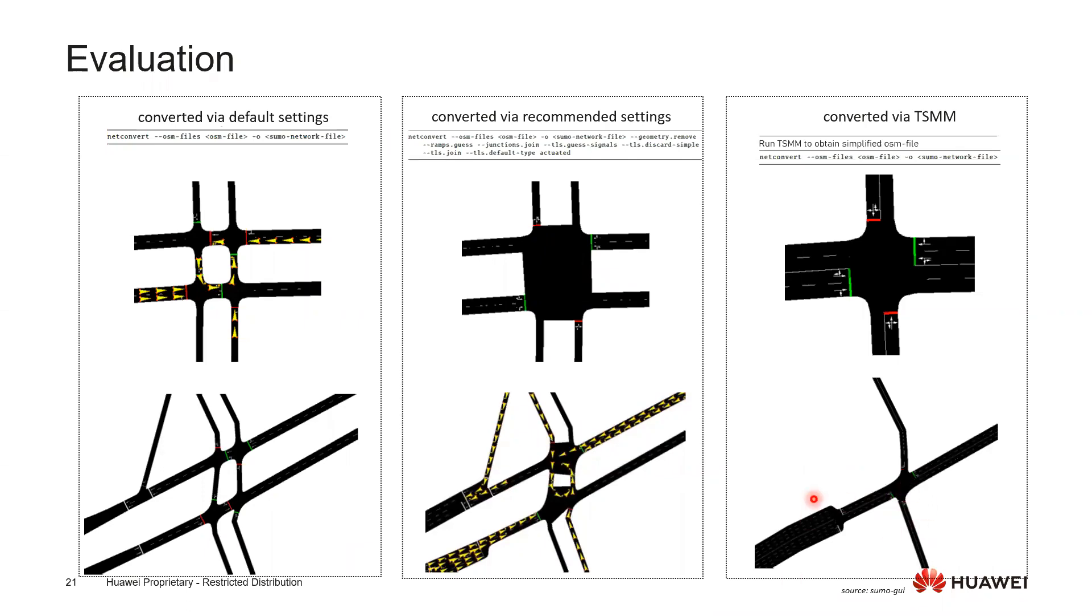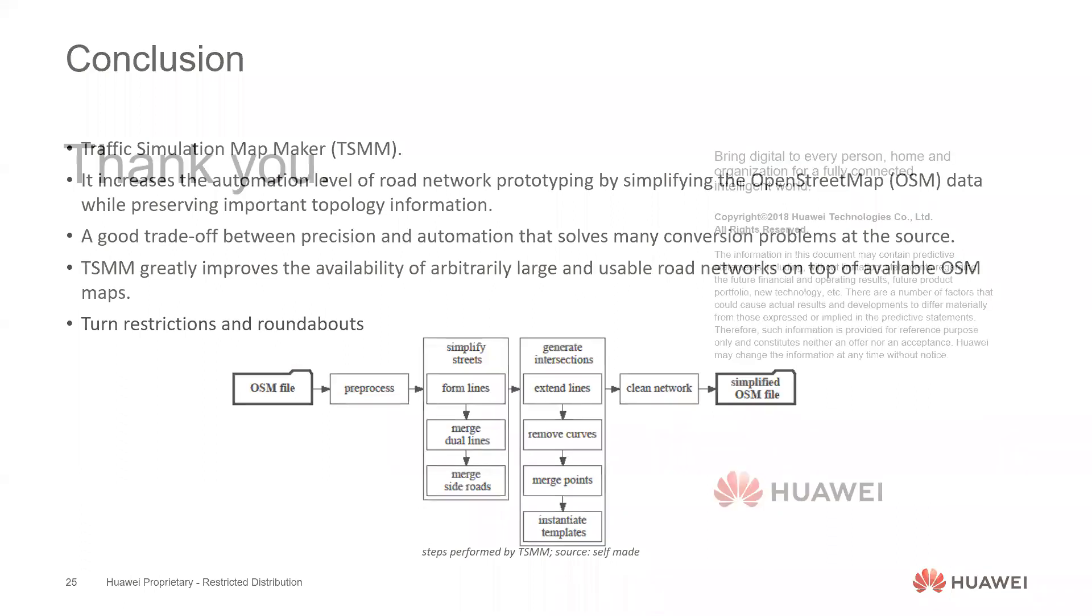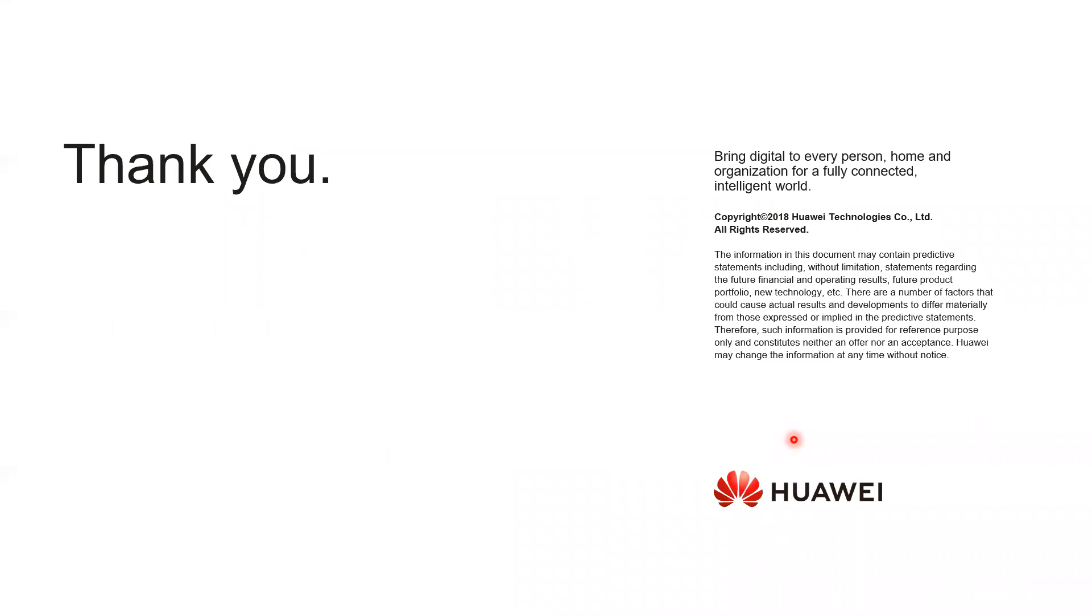As a conclusion, what I think our main contribution is that we propose the tools that can be used to increase the automation level of road network prototyping. We believe that this is a good trade-off between precision and automation. We believe that it can greatly improve the availability of arbitrarily large and usable road networks on top of available OpenStreetMap data. In the next steps, we are working on identifying turn restrictions and also dealing with the roundabouts to further improve our tools. I hope I make it on time, and thank you for your listening. If there is still time for questions, it would be really welcome. Thank you.